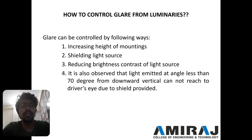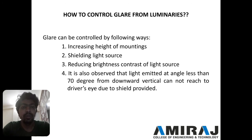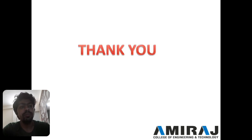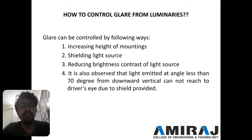Glare can be controlled by four ways. First, by increasing the height of the mounting — the height at which the light source is placed above the road pavement should be provided in such a way that it will not cause glare. Second is shielding of the light source. Third is reducing the bright contrast of the light source. Fourth, it is observed that when the light is emitted at an angle less than 70 degrees, it will not reach the driver's eye because we have provided a shield. These are the things to consider when avoiding glare from luminaries.